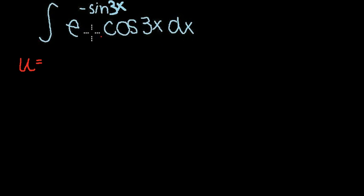Let me simplify that a bit. If we use negative sine of 3x for u, the derivative of that is going to be negative 3 cosine 3x.